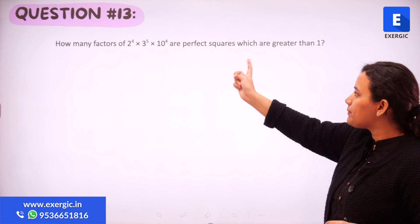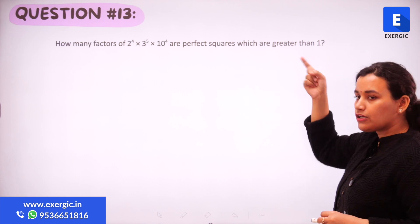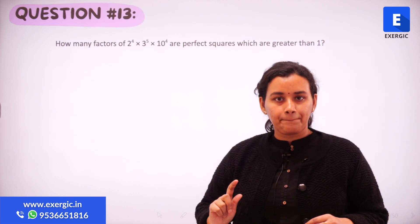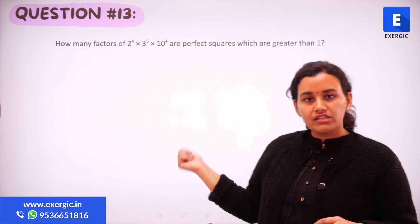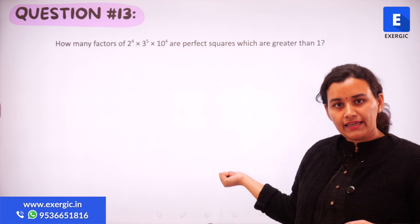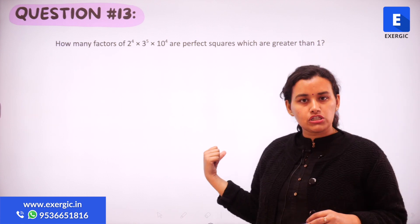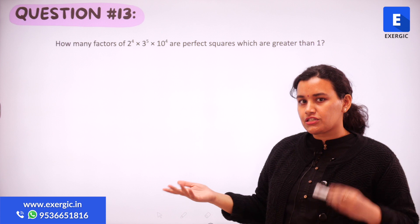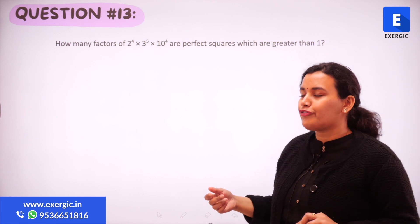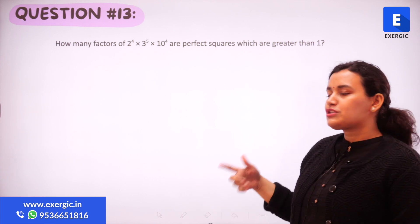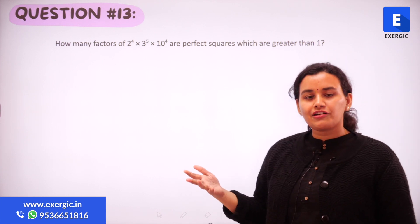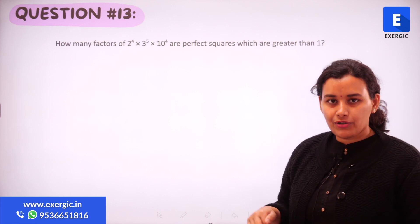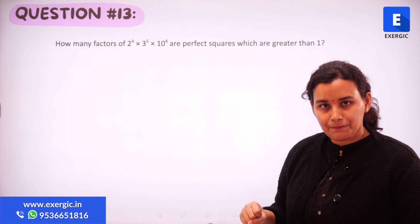So two conditions: the factors have to be perfect squares and they also have to be greater than 1. Give this question a try — it's one of those basic questions of prime factorization, so that's a hint for you. Give it a try and then cross-check it with the solution we are going to be discussing.